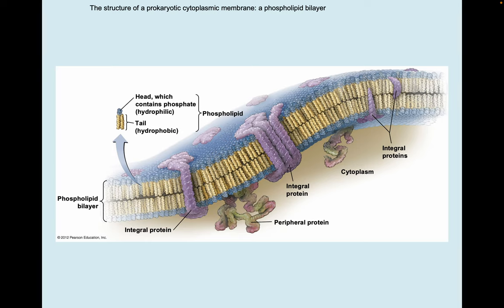The cell membrane isn't rigid — it's called the fluid mosaic model. I picture it like a bunch of beach balls floating in a swimming pool. If there's a wave, if somebody jumps in, it's going to make all those other balls bounce around and move and shift. And that's how the cell is able to be flexible.